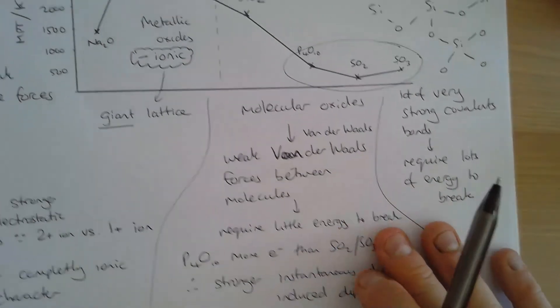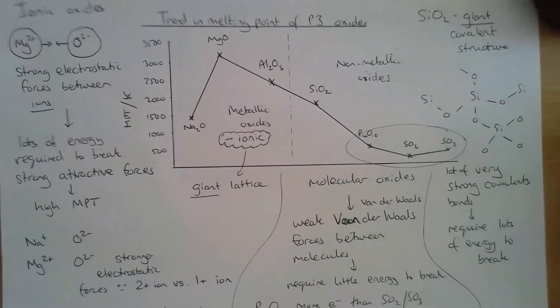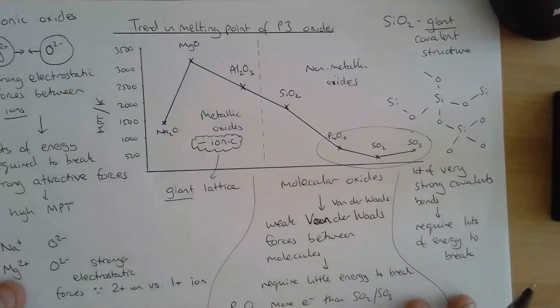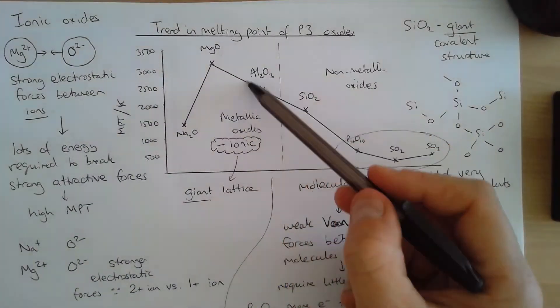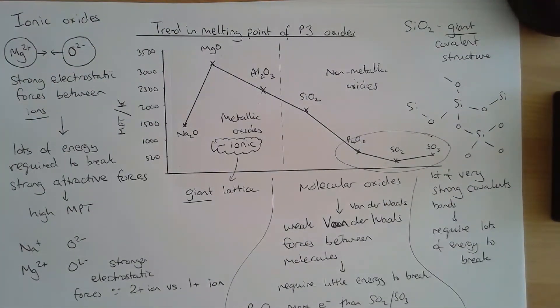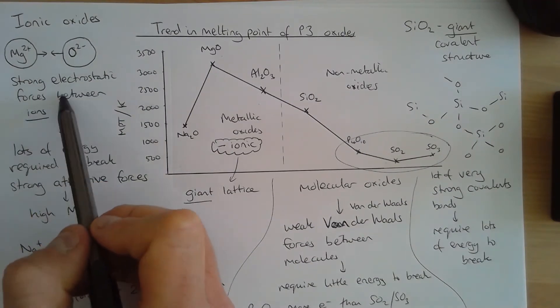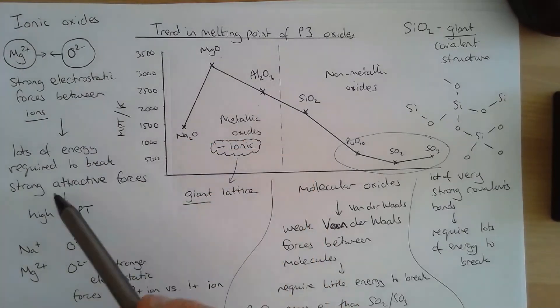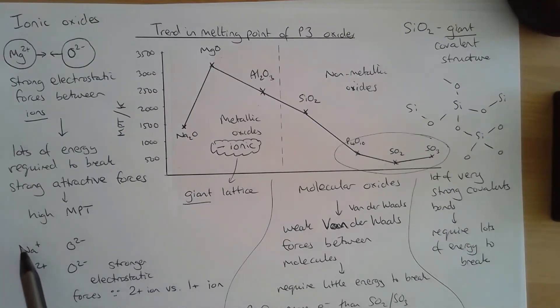So let's have a review of what we have looked at so far today. We've got our three metallic oxides. They form giant ionic lattices. We've got strong electrostatic forces between the ions. These require lots of energy to break these strong electrostatic forces, leading to a high melting point. We need to be able to explain that magnesium oxide has a higher melting point than sodium oxide because of the greater charge on the magnesium ion.